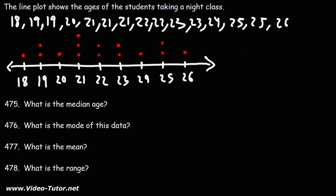Now that we've converted the line plot into a data set in increasing order, what is the median age? The median is the middle number. Let's eliminate the first and the last, then the next two, and continue doing that until we get to the middle. The middle number is 22 — that's the median.